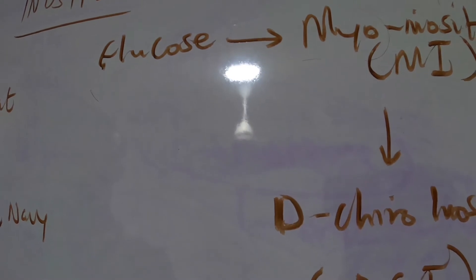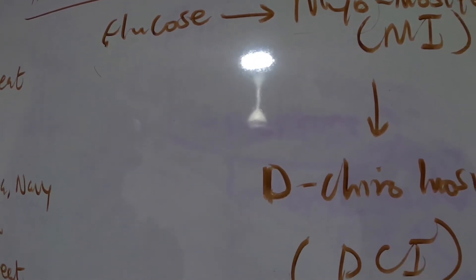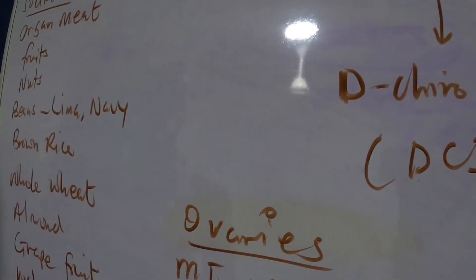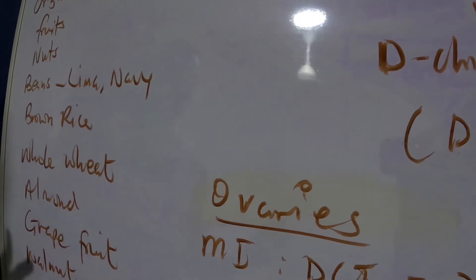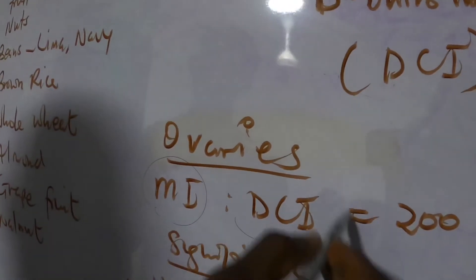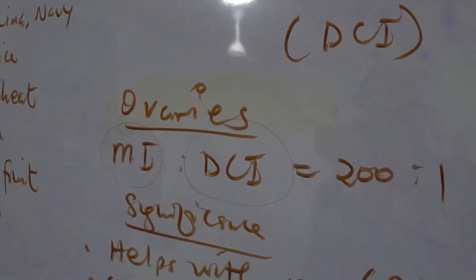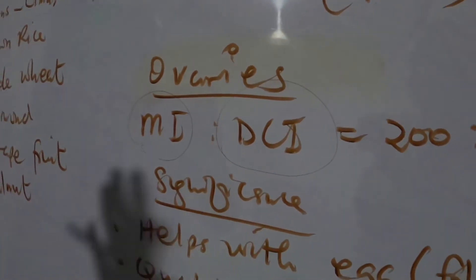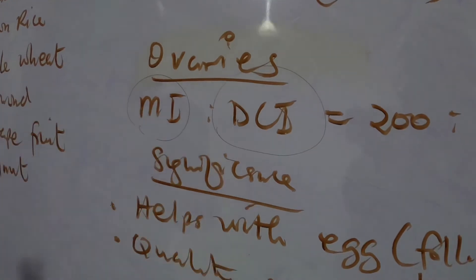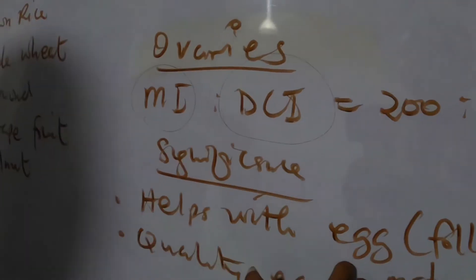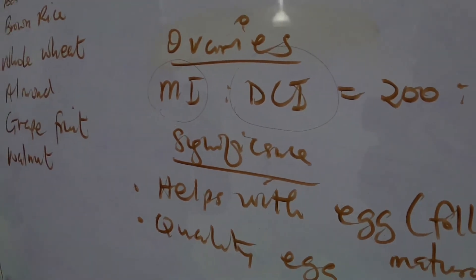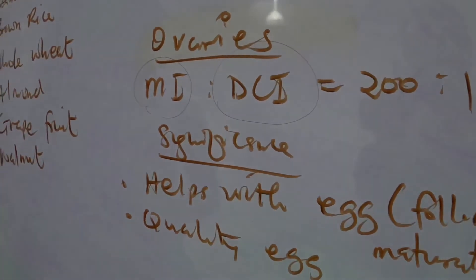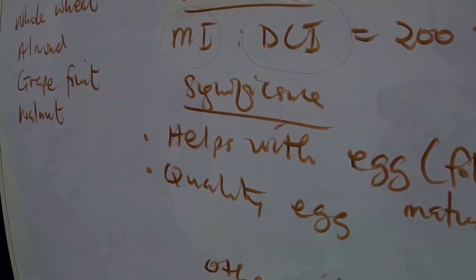In a case where a patient has PCOS and there's a problem with egg maturation, for such a person we will need an MI to DCI ratio of 200 is to 1. There are drugs on the market that contain the MI and the DCI in these proportions or these ratios. Once you take these drugs, you are likely to help with follicle or egg maturation. So for people with PCOS who have issues with egg maturation, an MI to DCI ratio of 200 is to 1 is very good for you.